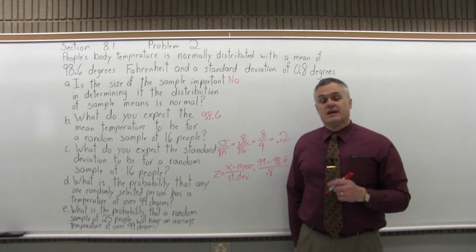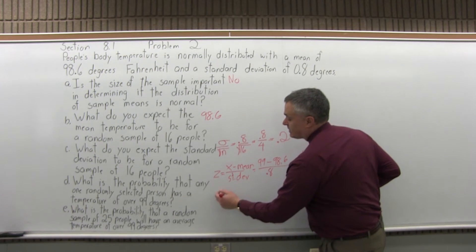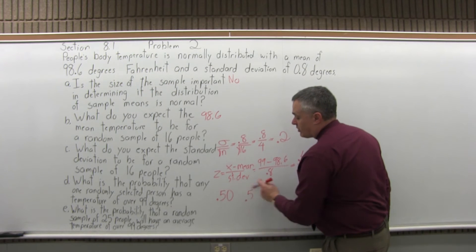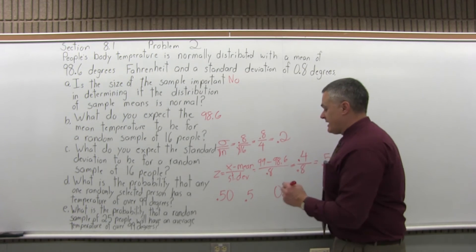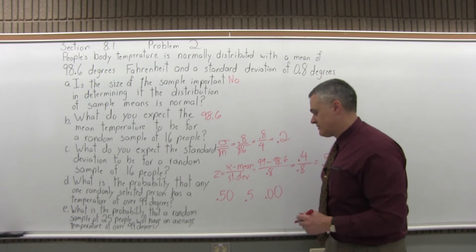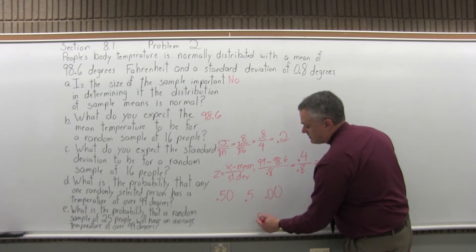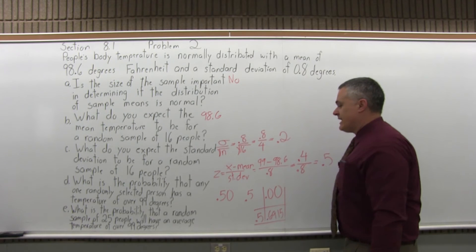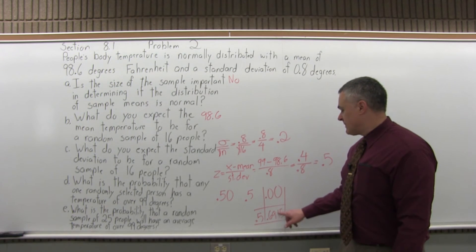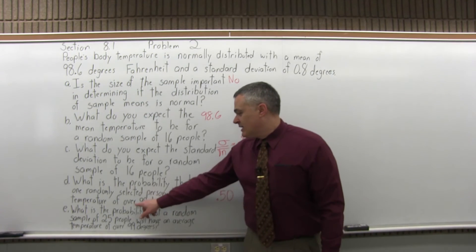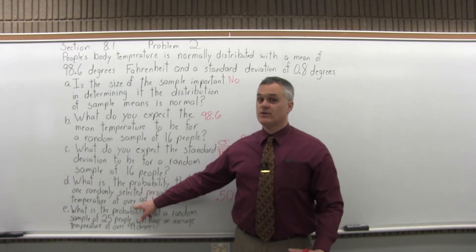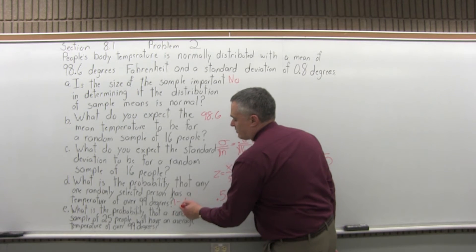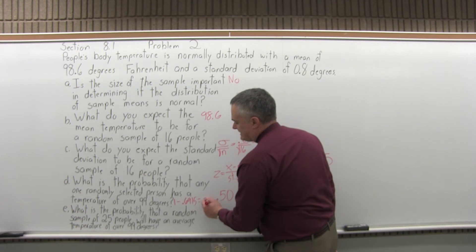Now look up 0.5 in the chart. Step 1: write it with two decimal places — 0.50. Step 2: split by pulling off the rightmost digit — the 0 comes off to the side. Step 3: put 0.0 in front of that digit. Step 4: go to the 0.5 row and intersect with the 0.00 column — you get 0.6915. That's not the final answer. The question asks for over 99 degrees, which is a greater-than question, so the answer is 1 minus the chart value: 1 minus 0.6915 equals 0.3085.